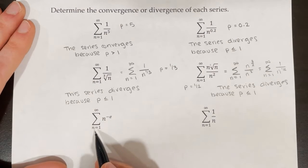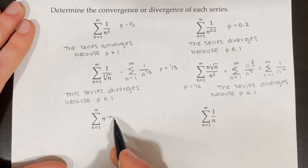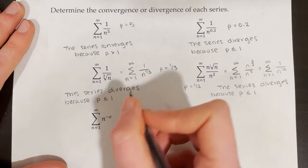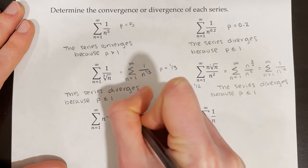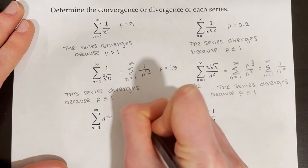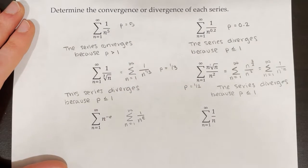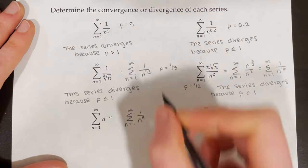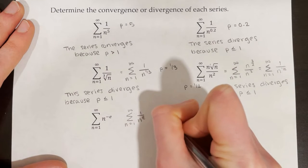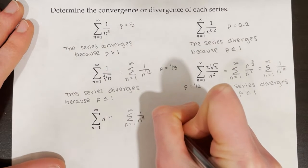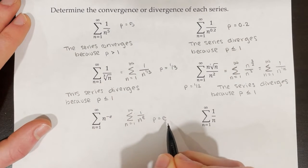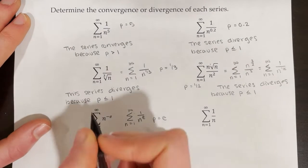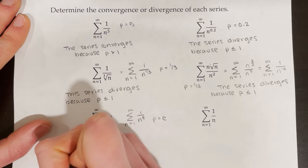Now we're looking at the series from n equals 1 to infinity of n to the power of negative e. This is the same thing as the series from n equals 1 to infinity of 1 over n to the power of e, so p is equal to e. Since e is about 2.7, it's greater than 1. Therefore the series converges because p is greater than 1.